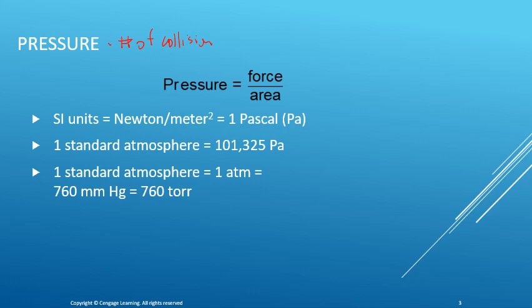The SI unit for pressure is what we call the Pascal. It is defined as one newton per meter squared — newton being the unit of force, meter squared being the unit for area. For our standard atmospheric pressure, gases will exert a pressure of 101,325 pascals. That's a really large number, so being a metric prefix, we also can use 101.325 kilopascals instead. You can use either of those.